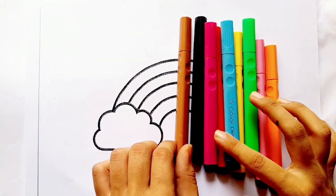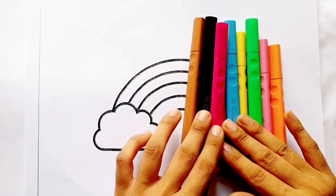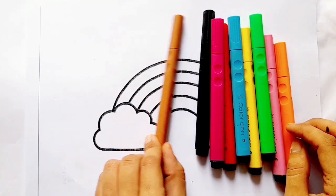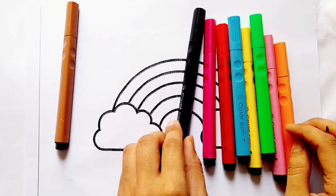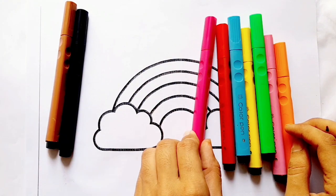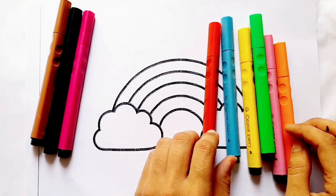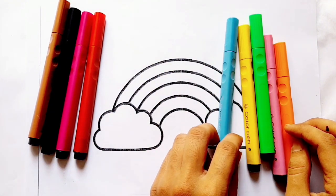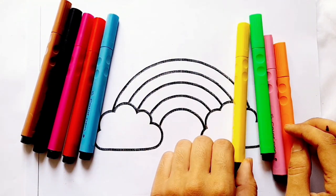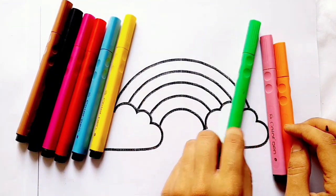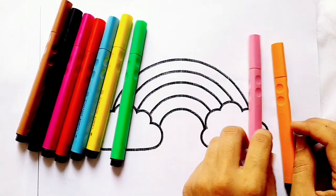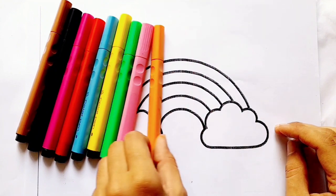First of all, I learned color names. Brown color, black color, pink color, red color, blue color, yellow color, light green color, little green color, orange color.